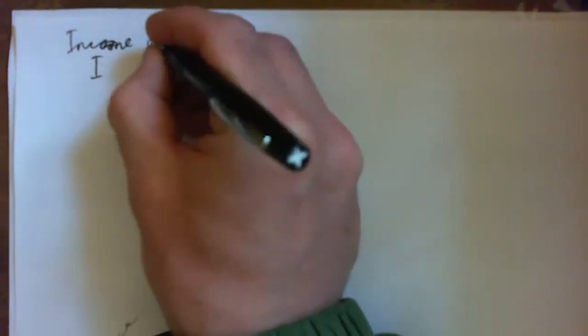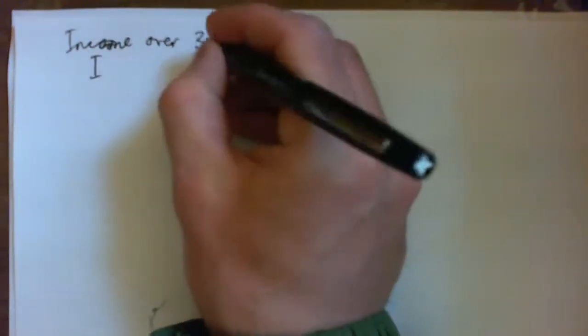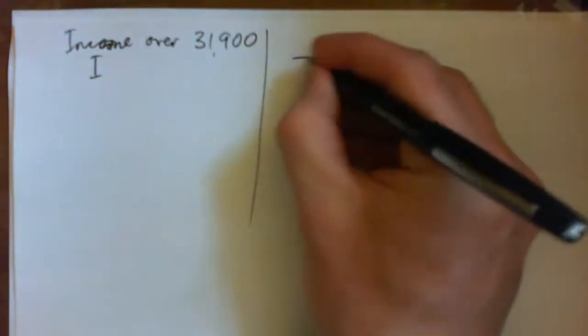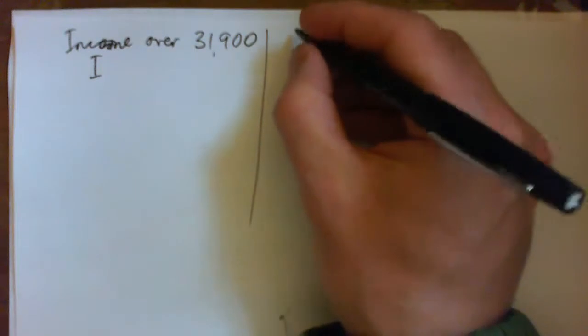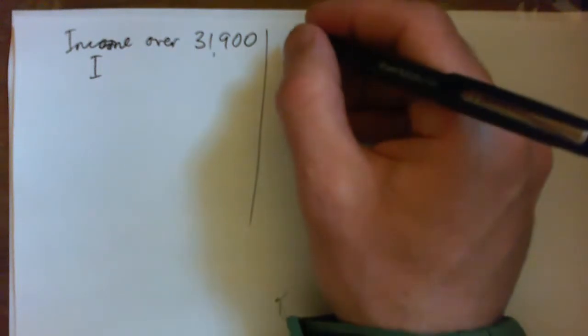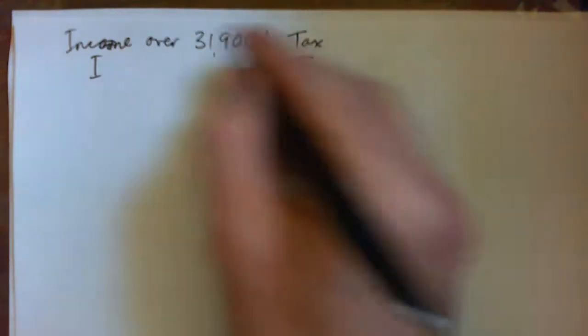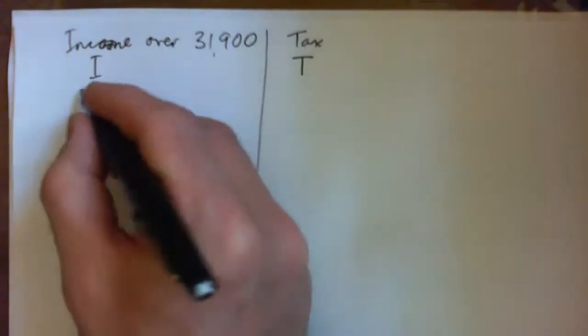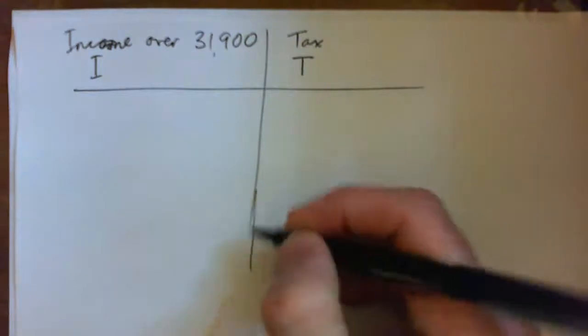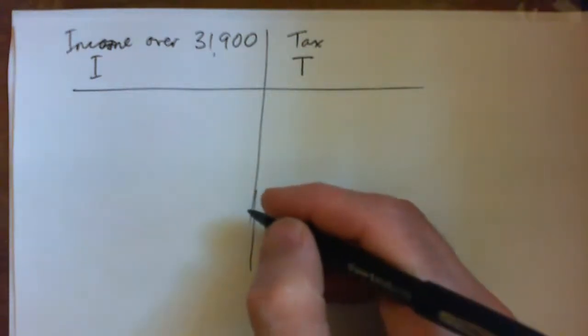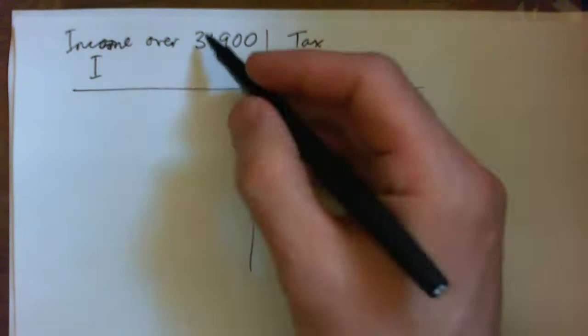They want I to be the income over $31,900, and they want T to be your total tax — because you already owe $4,393 for everything up to that point, so T is your total tax paid.